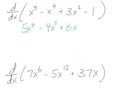For the second one, we have 6 times 7 is 42, that's 42x to the fifth minus 5 times 12 is 60, x to the 12 minus 1 is 11.